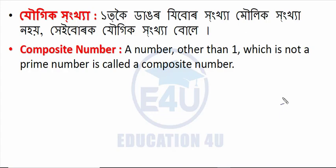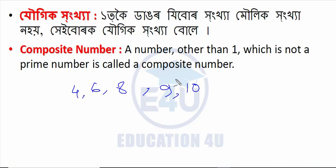A number other than 1 which is not a prime number is called a composite number. Composite numbers include 4, 6, 8, 9 and so on, which are divisible by numbers other than 1 and themselves.